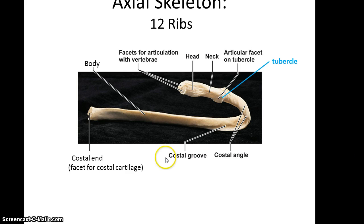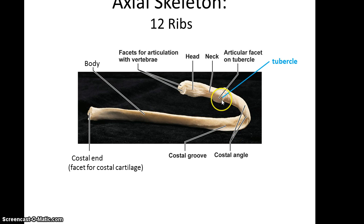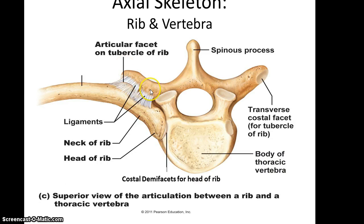Looking at the ribs themselves, they have the costal end — the facet for the costal cartilage — a long body, a costal groove, and then the costal angle as the rib curves. This leads to the tubercle, which has an articular facet that interacts with the transverse facet of the vertebra. The rib also has a neck and a head, and on the head are two small facets that articulate with the demi-facets on the vertebra. The articular facet of the tubercle articulates with the transverse costal facet, and the head of the rib interacts with both the inferior and superior costal demi-facets on the thoracic vertebrae. And that's it for this chapter.